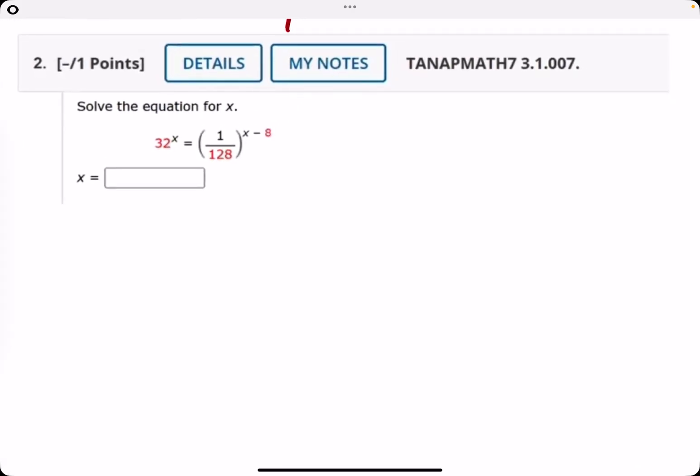So number 2, solve the equation for x. Same approach here, we want to rewrite the 32 and the 1 over 128 on both sides so that the bases match. This might take some trial and error, but hopefully after messing around with it for a little bit, you realize that you can rewrite both 32 and 1 over 128 with the same base of 2.